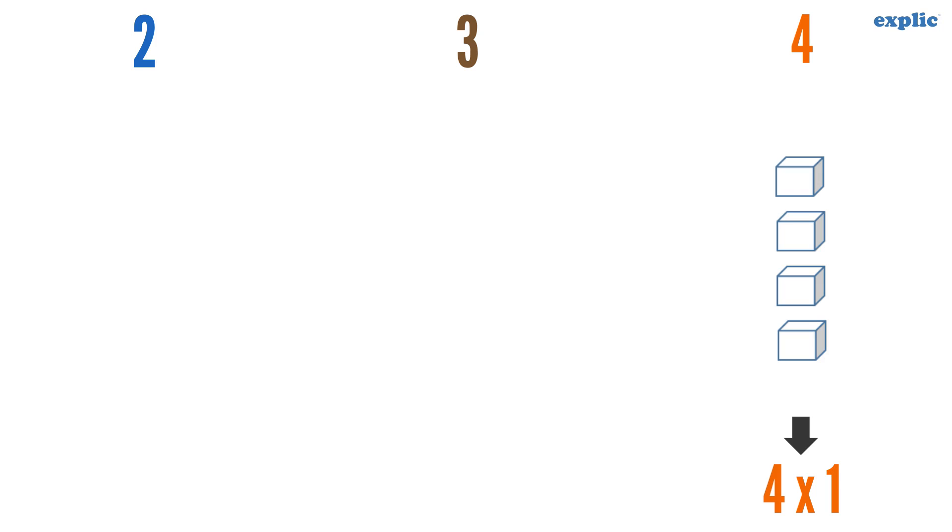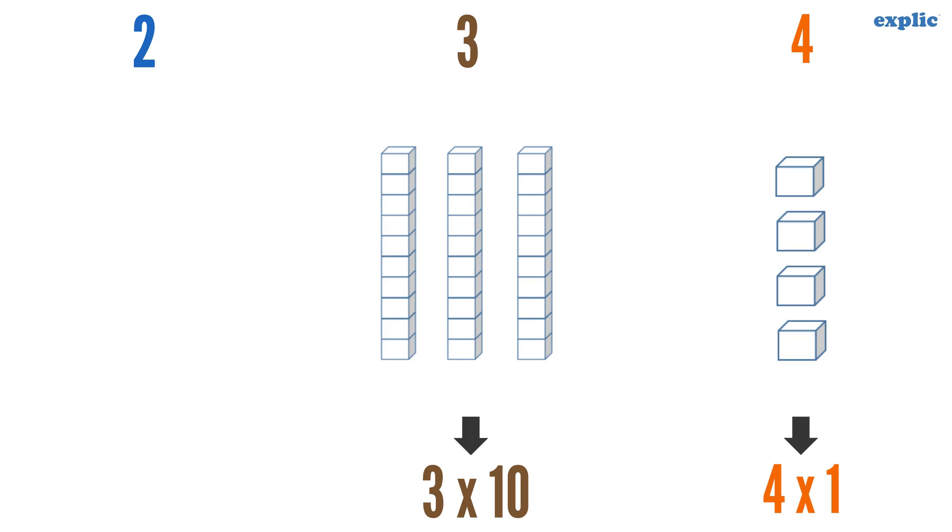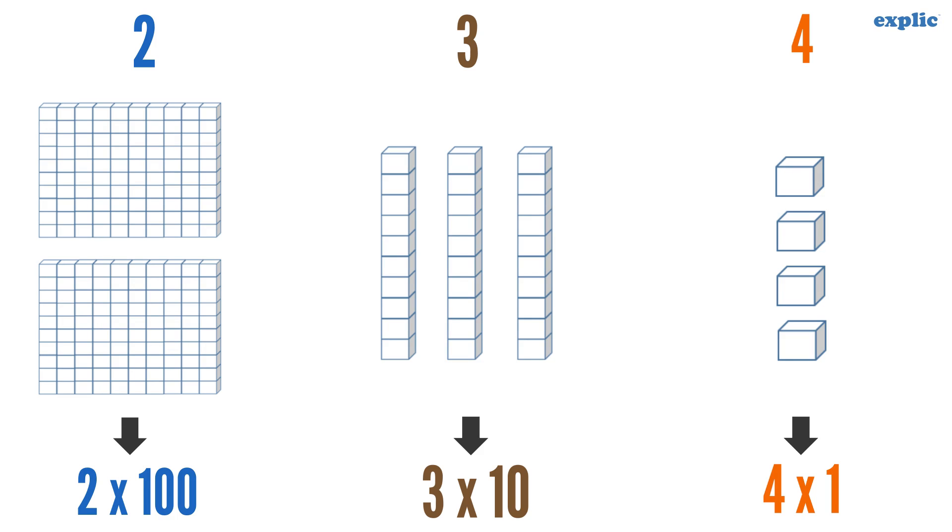The place value of 3 can be represented as 3 sets of 10 blocks, and the place value of 2 can be represented as 2 sets of 100 blocks.